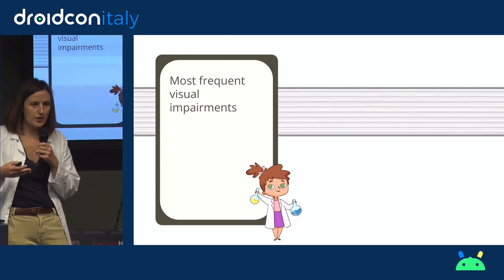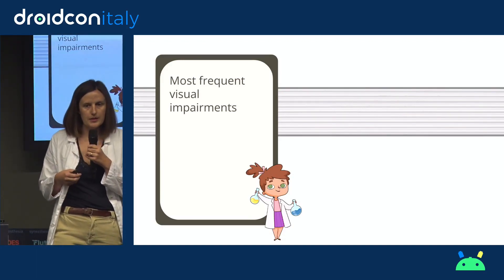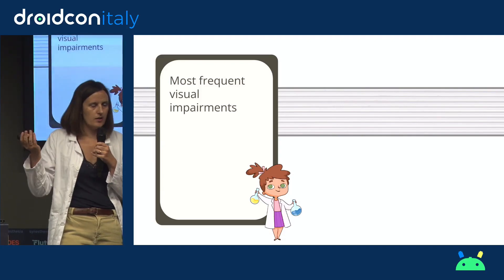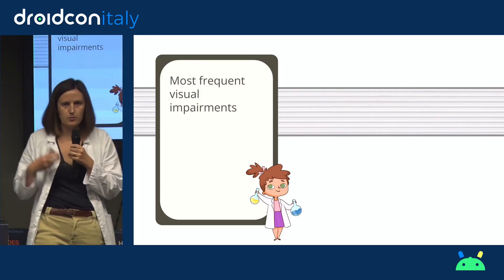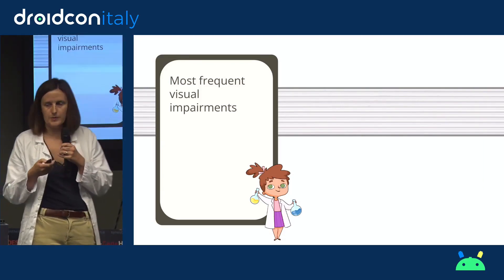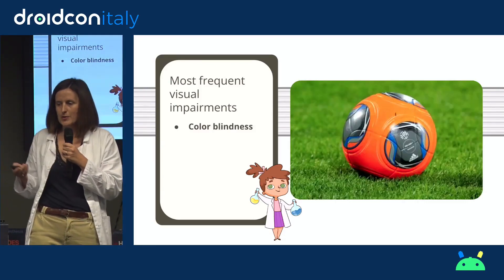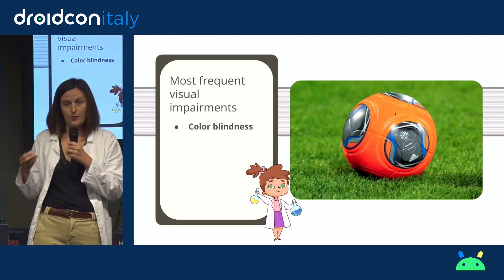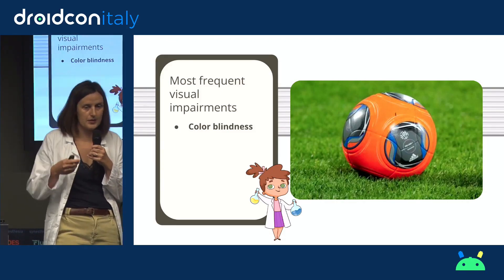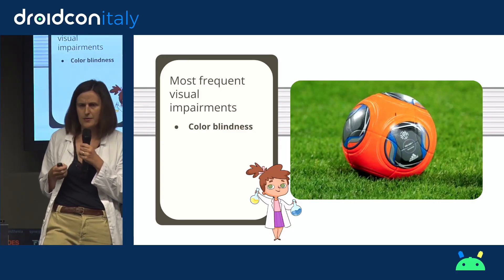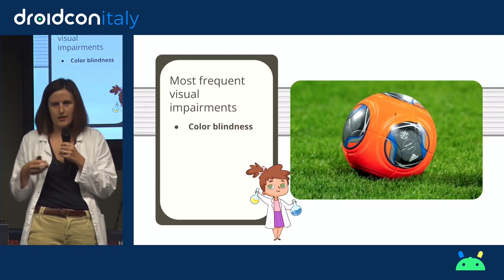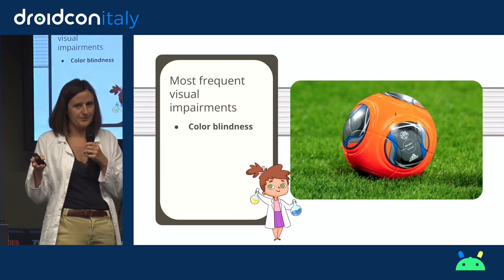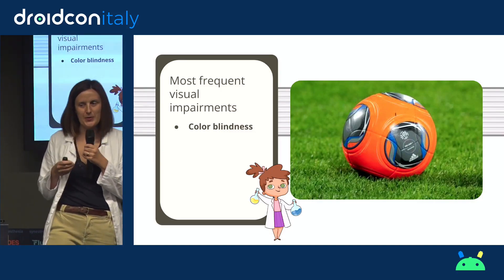I want to share the most frequent visual disabilities, because we might have some people here with them. The most common is color blindness — a lot of men have this disability, around 10%. And since we are in Italy, a lot of you like football, right? So if you were color blind in 2013 and watching the league, you were probably not able to see the ball, because for someone with color blindness, green grass appears to be orange.